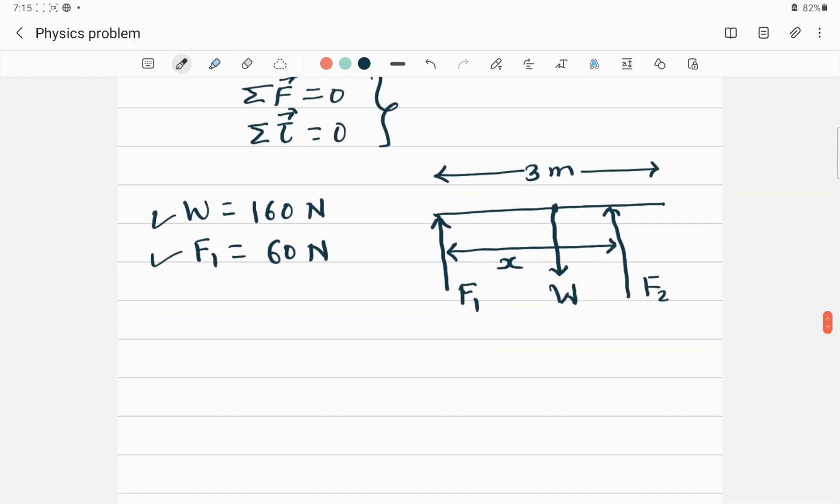Now our first goal is to check whether the first condition of equilibrium is true. So summation Fy because forces are acting in y-axis. So we can say all the forces in y-axis. So what are the forces? F1 acting upward, which is positive, and then W acting downward, which is negative, and F2 acting upward. So this one is equal to 0.